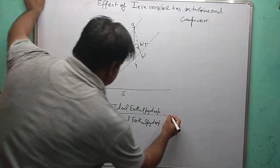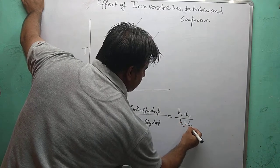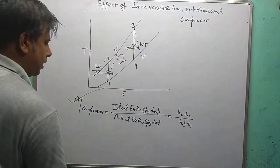So ideal enthalpy drop is H2 minus H1 over H2 dash minus H1. So this is an important diagram.